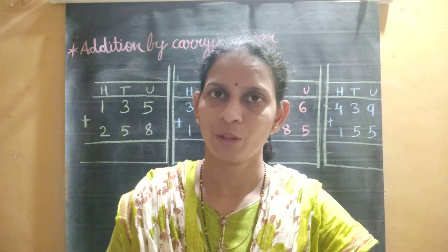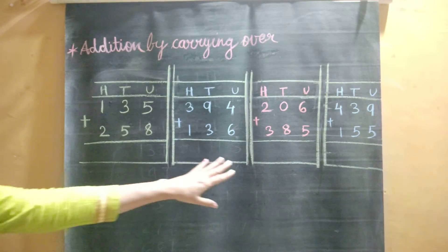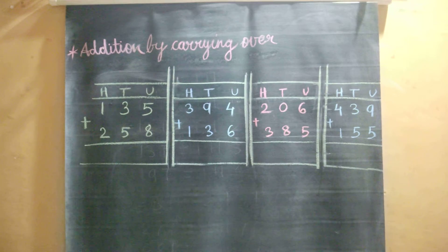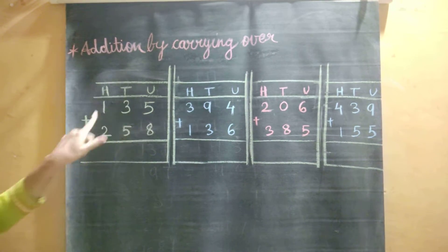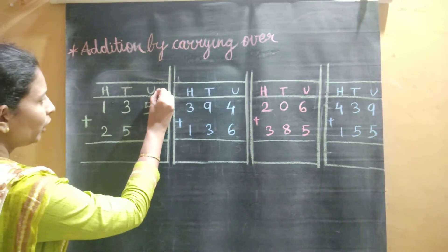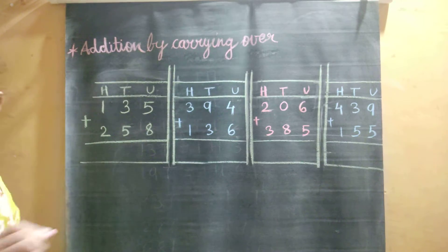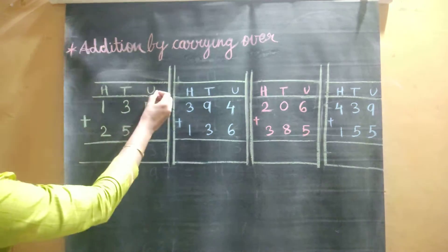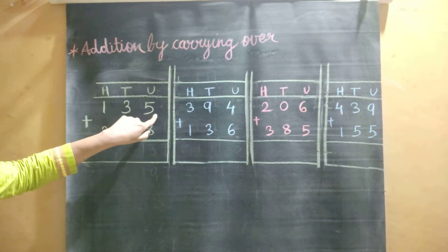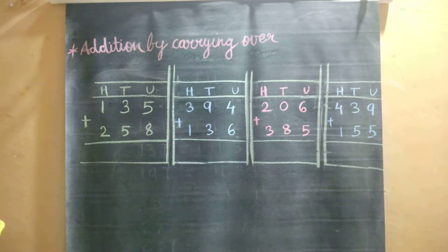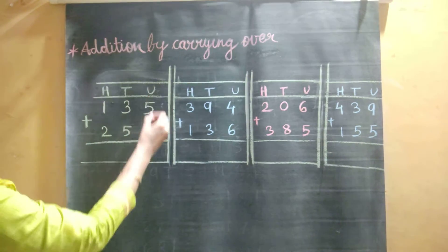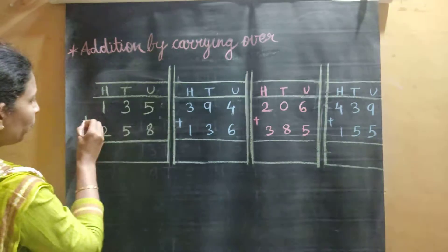We will solve some examples. I have written some examples here, so first we will read them. The first example is 135 plus 258. Students, you can see here the unit place, tens place, and hundreds place. This is a three-digit number — there are three places: unit, tens, and hundreds. So we have 135 and 258. First we will do the addition of digits at the unit place.